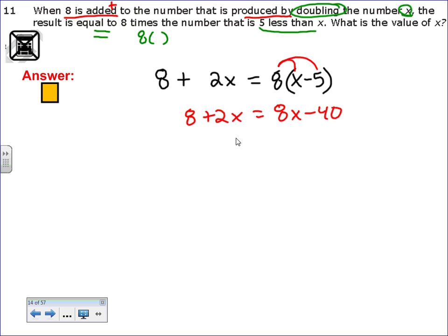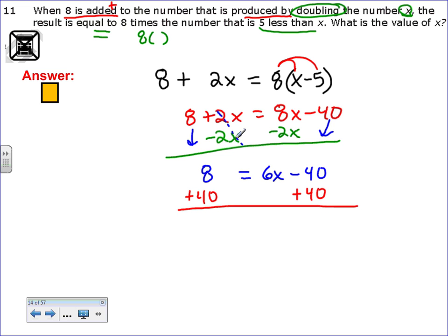I have 8 plus 2x, I'm going to distribute 8x minus 40. Now I need to get my x's on the same side of the equal sign. I'm going to subtract 2x because I like to keep my x's positive. 8 take away 2x is 6x. Bring down the 40. Now I want to get x by itself. I need the 40 to go away. It's negative, so I'm going to add 40 to both sides.